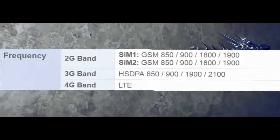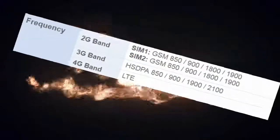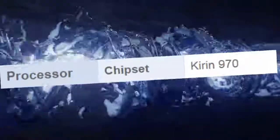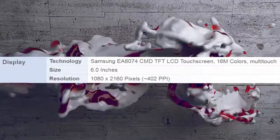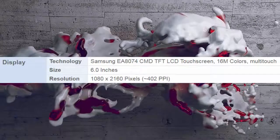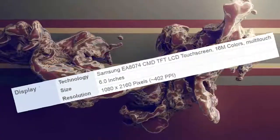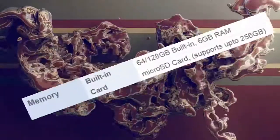3G bands: WCDMA 850, 900, 1900, 2100. 4G band: LTE. Processor chipset: Kirin 970. Display technology: Samsung AMOLED. TFT LCD touchscreen, 16M colors, multi-touch. Size: 6.0 inches. Resolution: 1080 by 2160 pixels, approximately 402 PPI.